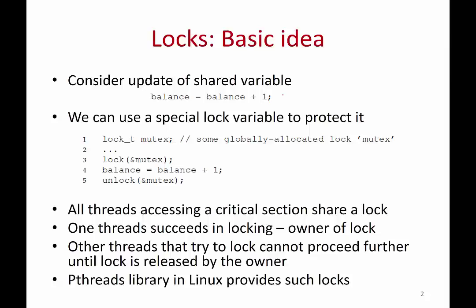In such cases we need to use a special lock variable in order to provide mutual exclusion. So let's call this lock 'mutex'. You declare this lock variable, you call the lock function on it, you access your critical section, and then you unlock it. This piece of code between the lock and unlock is called a critical section, and a lock ensures that only one thread is executing the critical section at a certain point of time.